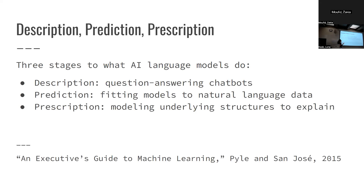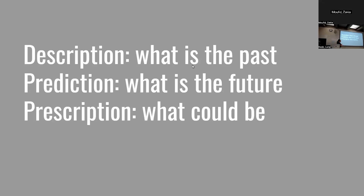This is an overview of what AI language models do: description, prediction, prescription — three stages. Description is question-answering, chatbots and things like that. Prediction is fitting models to language data — predicting the next word — which is basically where we are now with things like ChatGPT. Prescription is modeling underlying structures to explain, which is a next stage of machine learning that is much trickier and more challenging. Description is what is in the past, prediction is what is the future, and prescription is what could be — that's the judgment aspect of AI.